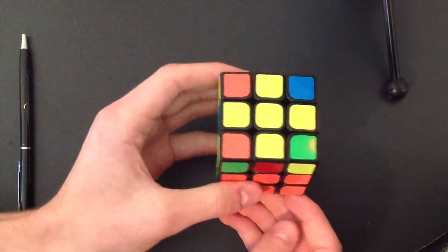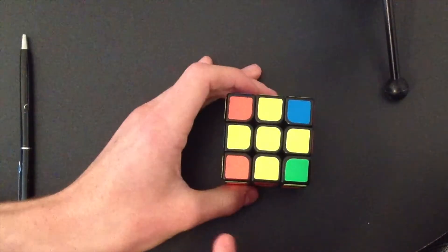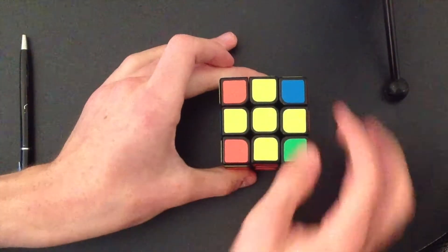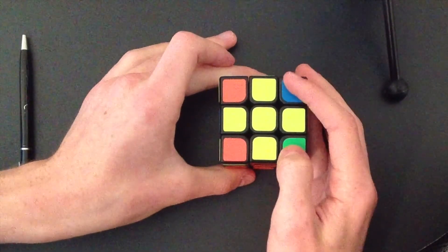This next case looks like this. So this time it's the opposite. So it's the same OLL, but this time the block is in the front and these two here are opposite.